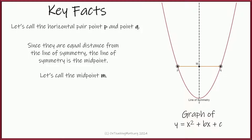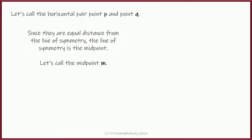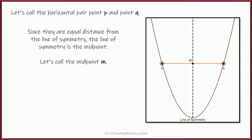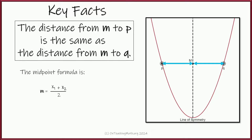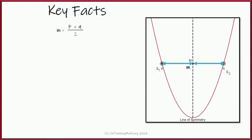Let's pause our picture here. We'll have p on one side, q on the other side, and m is in the middle — they're all lined up. That midpoint is called m. The reason we know it's the midpoint is because the line of symmetry is exactly in the middle of p to q, so m to p equals m to q. The midpoint formula takes the two endpoints, x1 plus x2 divided by 2. In our case, p plus q divided by 2 equals m.